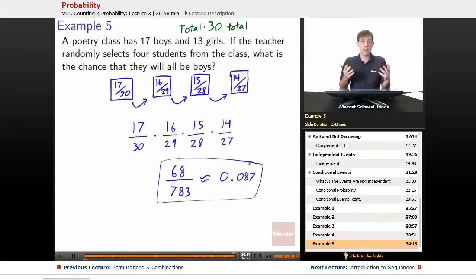It drops down pretty quickly. The first boy is a 17 out of 30 chance, but we drop down pretty quickly by the time we're at the fourth boy. It is a less than 1 in 10 chance.